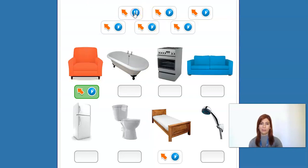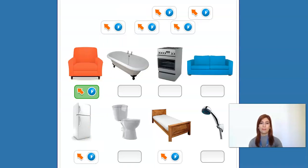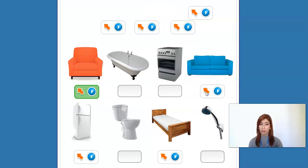B. Fridge. Okay, so where is the fridge? Right here. C. Couch. Right, so this is the couch.